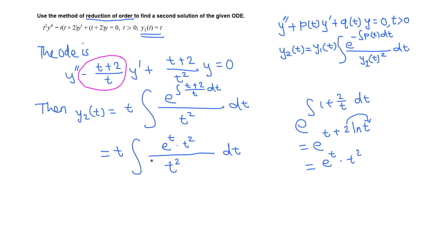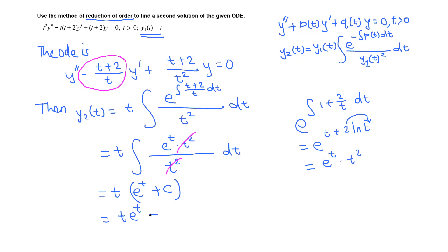Now we have t times the integral of (e^t · t²) / t², and the t² cancels from top and bottom. This leaves t times the antiderivative of e^t, which is just e^t plus a constant. Distributing the t gives t·e^t + c·t. Since we only need a second solution, we can take c = 0, giving us t·e^t.